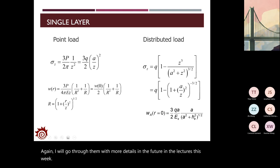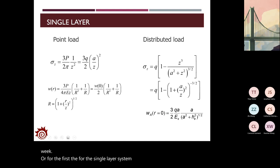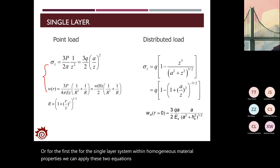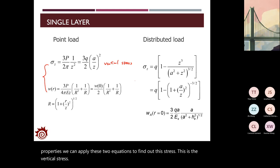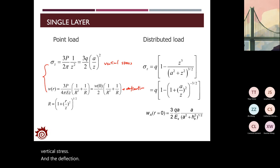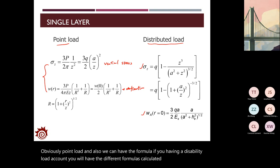For a single-layer system with homogeneous material properties, we apply two equations to find vertical stress and deflection—one for point load and another for distributed load, which gives different formulas for vertical stress and deflection.